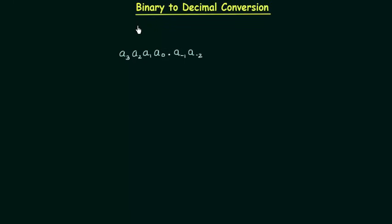In the last few presentations we completed conversion of decimal numbers to other number systems. In this lecture we will do the reverse of it. We have a binary number and we will convert it to a decimal number. I will first generalize the case for others to decimal.